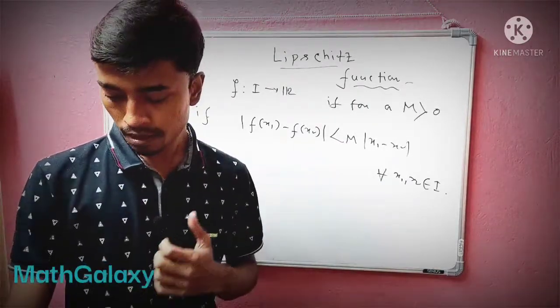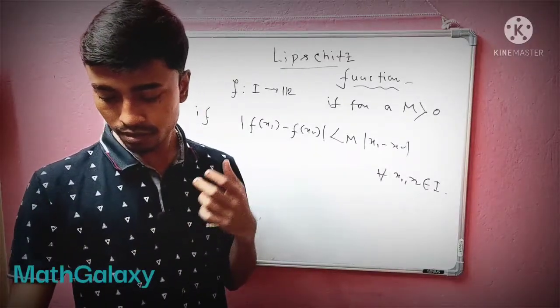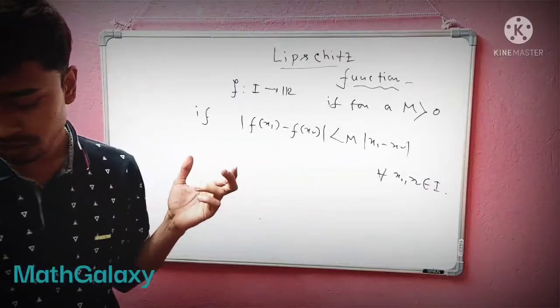or it satisfies the Lipschitz condition. And it has some certain properties - if the function basically satisfies this kind of Lipschitz condition, then it is called uniformly continuous function.